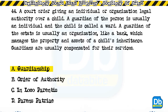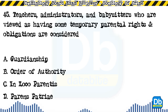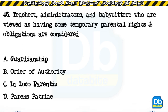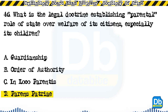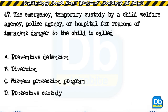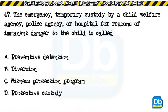Question 46: What is the legal doctrine establishing the parental role of the state over the welfare of its citizens, especially its children? a) guardianship, b) order of authority, c) in loco parentis, d) parens patriae. The answer is D, parens patriae. Question 47: The emergency temporary custody by a child welfare agency, police agency, or hospital for reasons of imminent danger to the child is called: a) preventive detention/protection, b) diversion, c) witness protection program, d) protective custody.